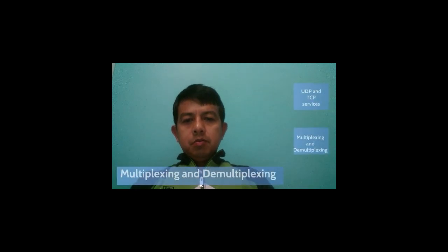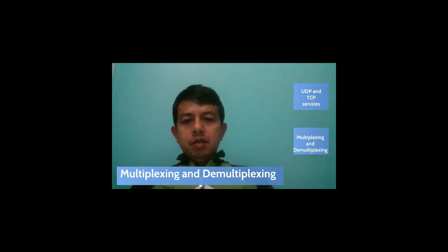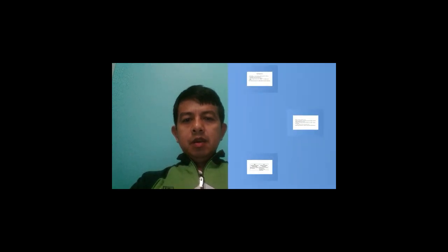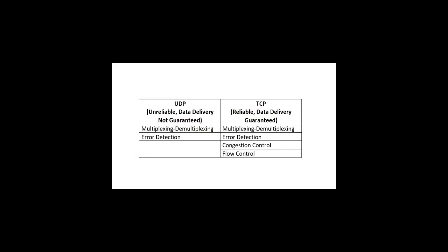In the last lecture we had an introduction to the transport layer and saw that there are two protocols: UDP and TCP. Today we'll discuss one of the functions of these two protocols — multiplexing and demultiplexing. Before understanding how multiplexing and demultiplexing works, let's first look at the major services of TCP and UDP.